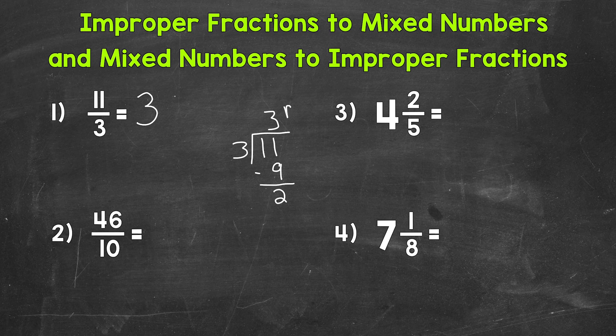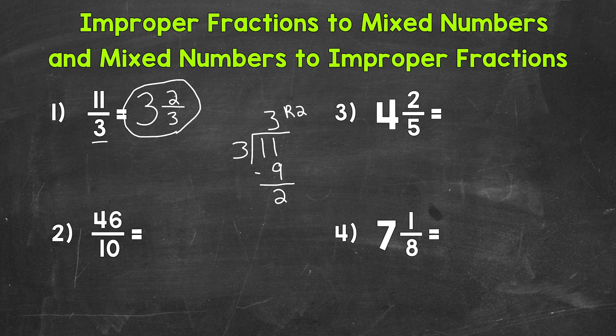And we end up with a remainder of 2. We did not hit 11 exactly. So that remainder is going to be our numerator. And then we use the original denominator of 3 for the denominator of our fractional part of the mixed number. Always check to see if you can simplify the fractional part of a mixed number. 2 thirds is in simplest form. So we are done.